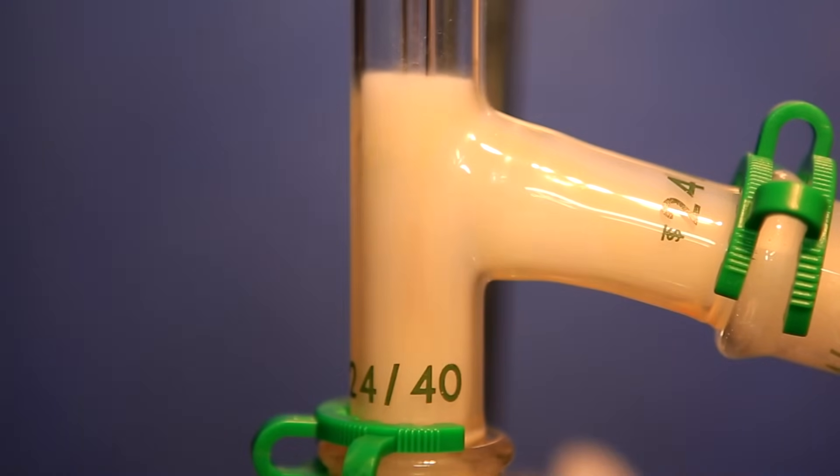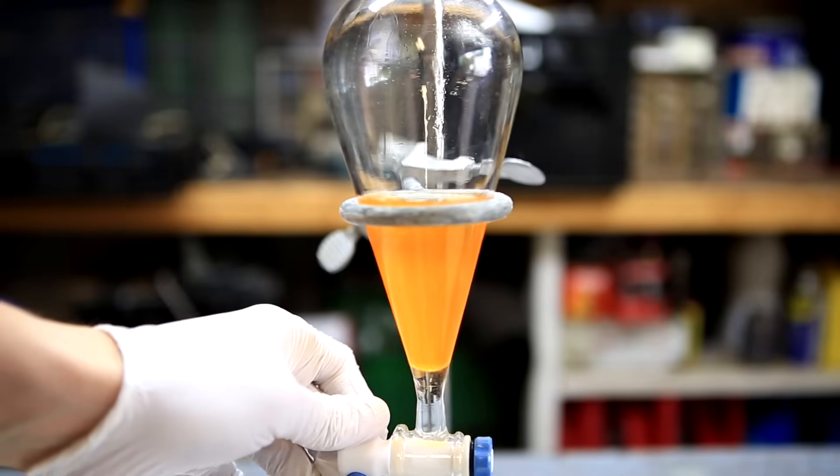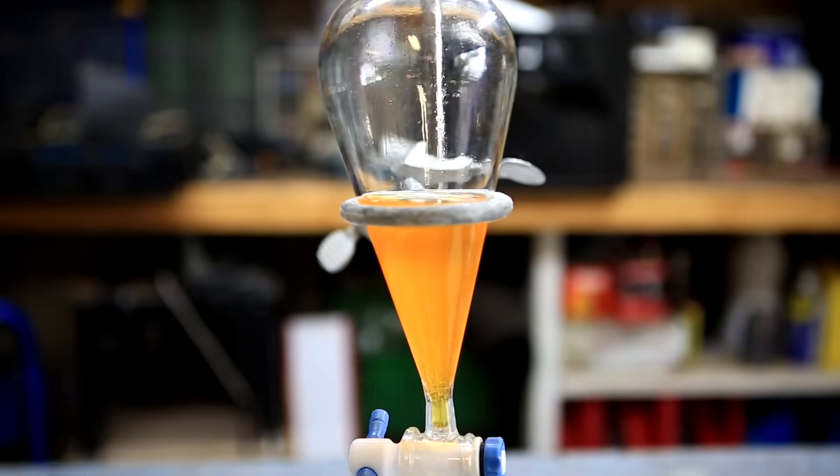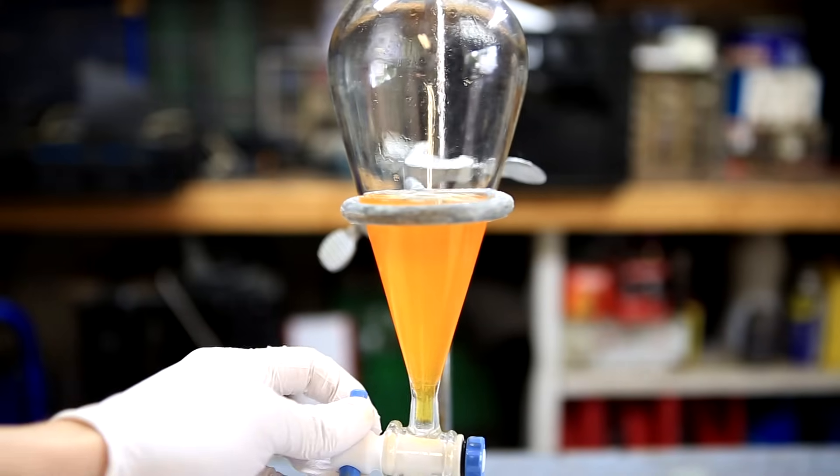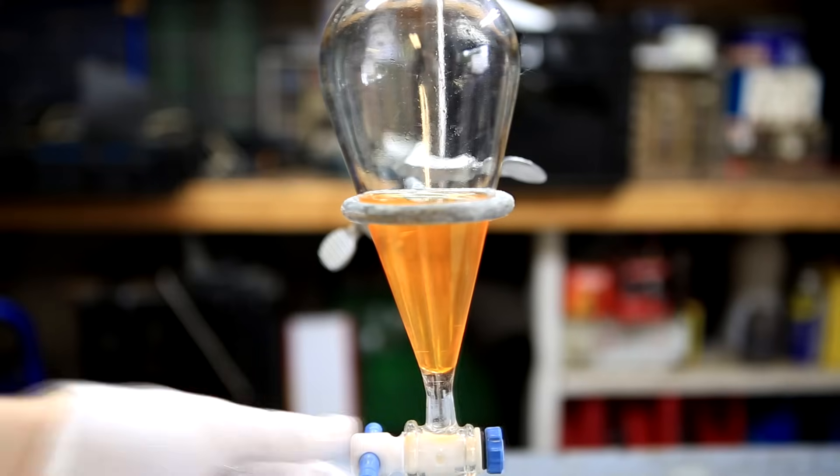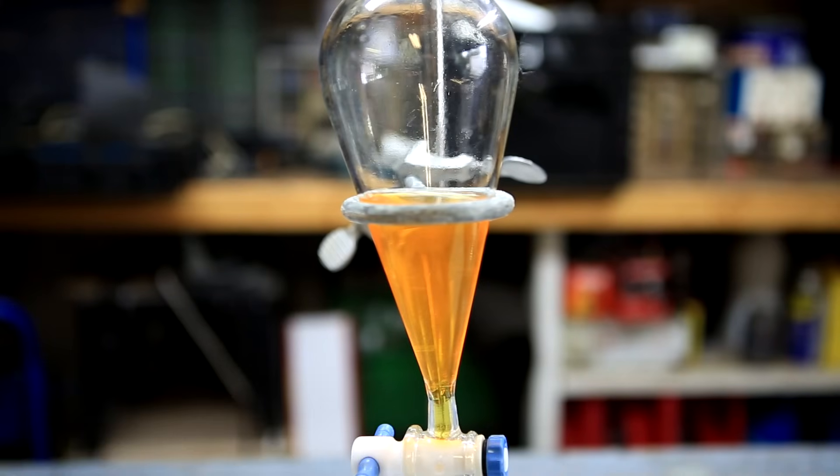Benzene is a colorless and highly flammable liquid and it's actually a natural component of crude oil. The main use of benzene is as a chemical precursor for things such as nitrobenzene, or for things like styrene which are used to make polystyrene also known as styrofoam.